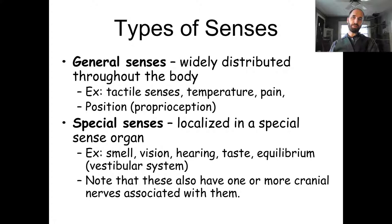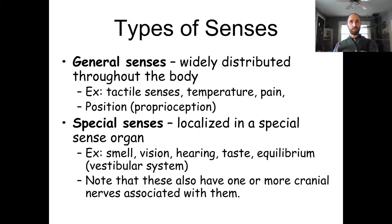There are a couple different kinds of senses: general senses and special senses. General senses are found in most places in the body — things like touch, temperature, and proprioception.